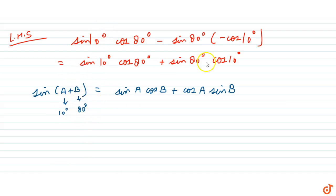Then this expression will be equals to sine 10 degree plus 80 degree which is equals to sine 90 degree. And we know that sine 90 degree is equals to 1, which is equals to our right hand side. So this question is proved.